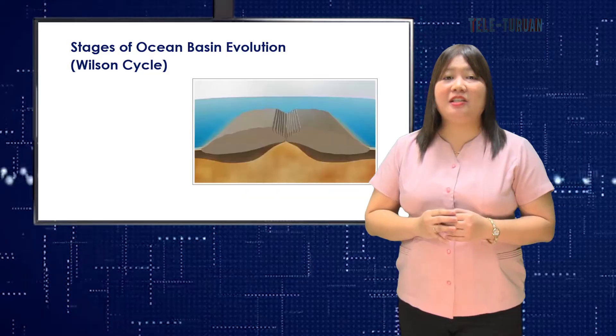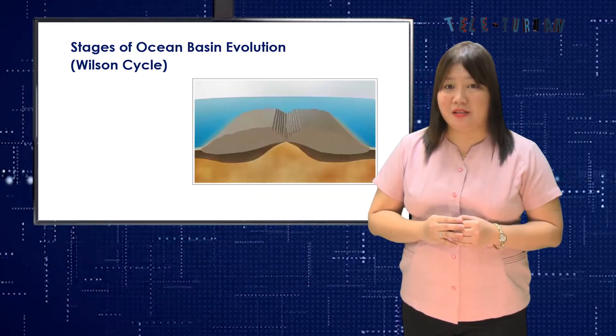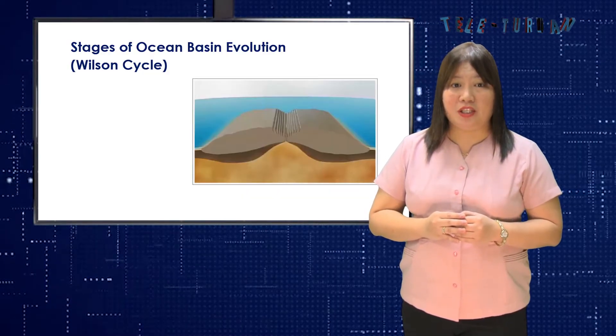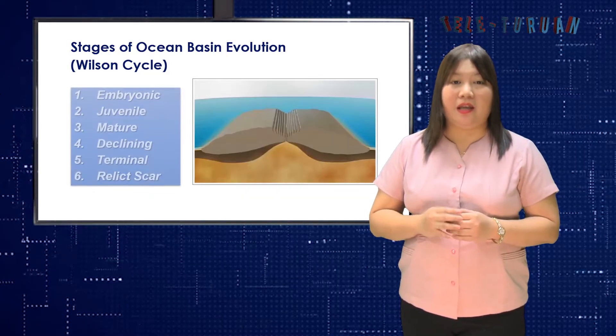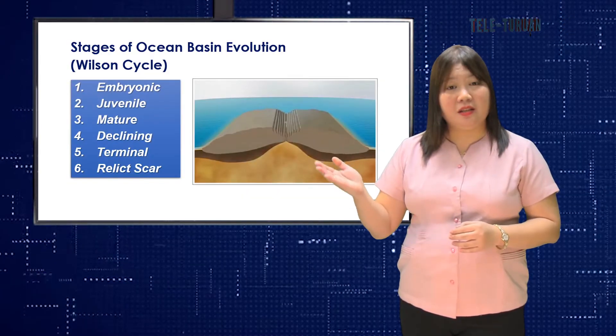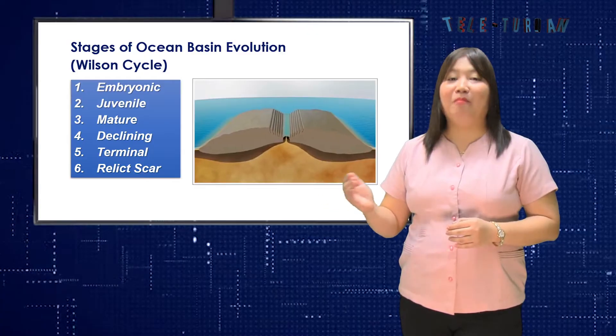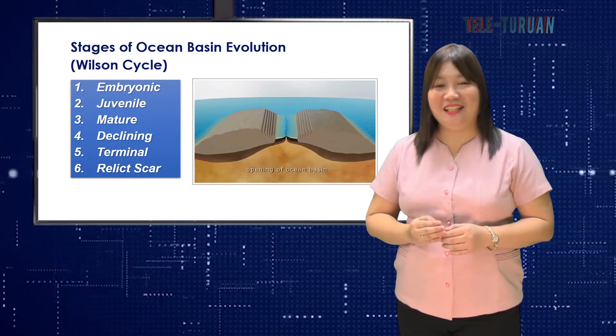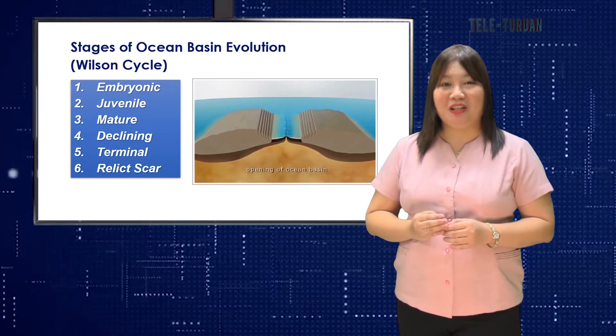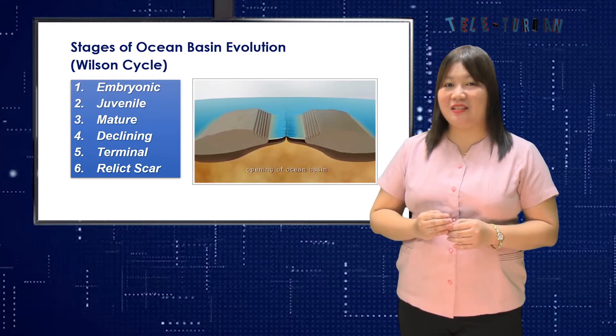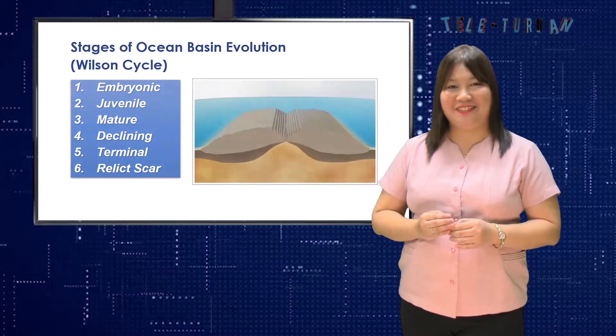The stages of ocean basin evolution include embryonic, juvenile, mature, declining, terminal, and relict scar.